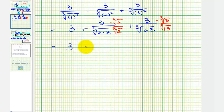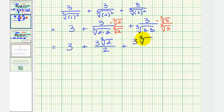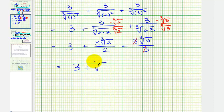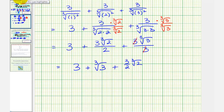Now we'd have three plus three times the cube root of two divided by the cube root of two cubed, which is two, plus three times the cube root of three divided by the cube root of three cubed, which is three. Notice how for the last fraction, three over three simplifies to one. So we have three plus three-halves times the cube root of two plus the cube root of three.